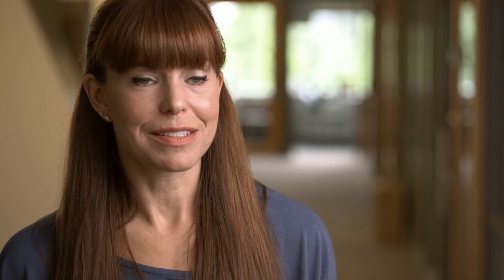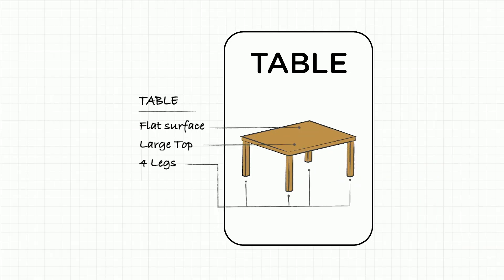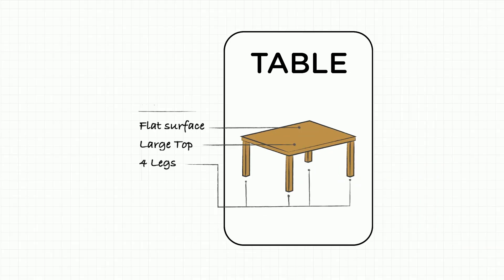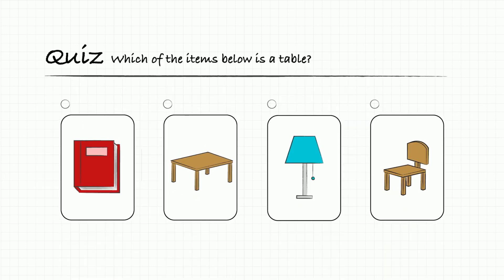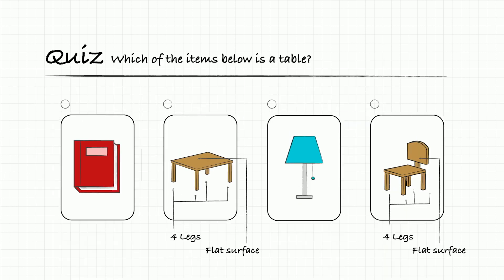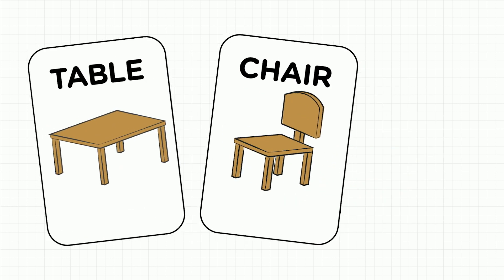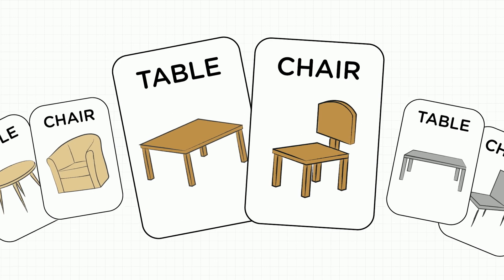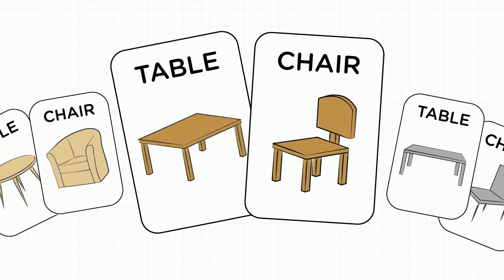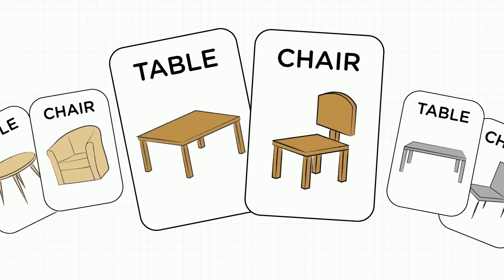A preschool teacher might teach a child how to recognize a table. They would show some examples and explain the characteristics of a table in comparison to other objects. Then they'd quiz to see if the student understands the differences. And when there's confusion with a similar item like a chair, the teacher wouldn't just say 'wrong' — they'd explain the differences even further to aid comprehension.